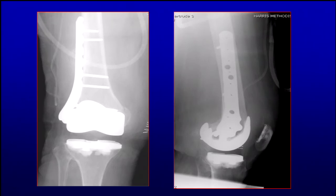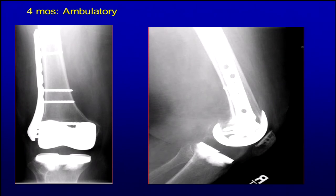Here we are post-operatively. I was happy with the reduction. In this case, she didn't need a 22-hole plate — she needed about a nine or 10-hole plate. I was happy with the alignment. She went on to do well and was ambulatory and moving around at four months.